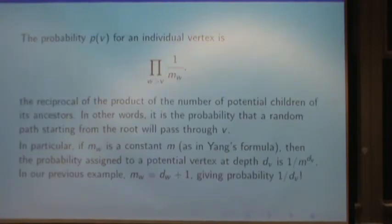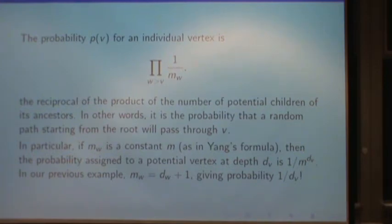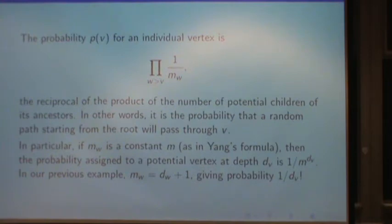The probability we get for an individual vertex in Sagan's algorithm is the product of the number of slots of children for its ancestors. That is, it's the probability a random path starting from the root will pass through the vertex.